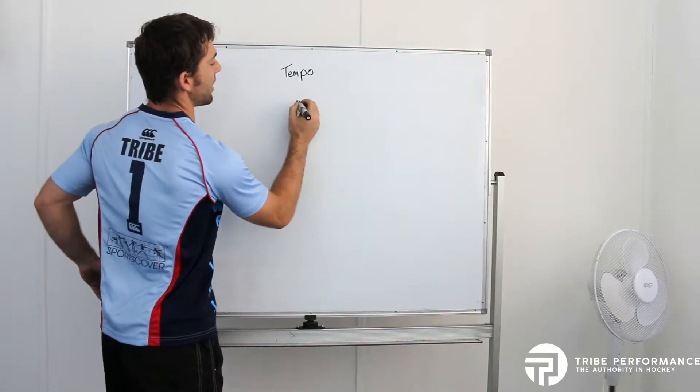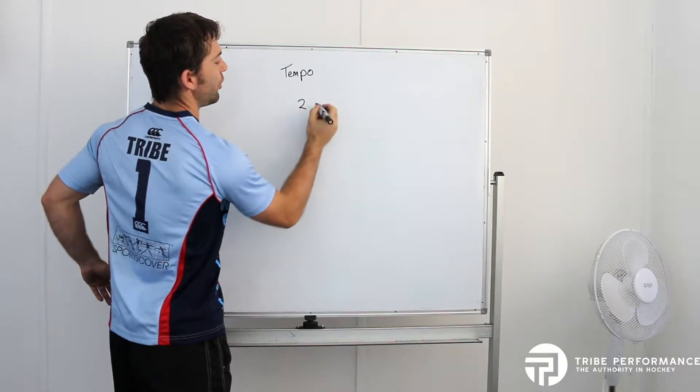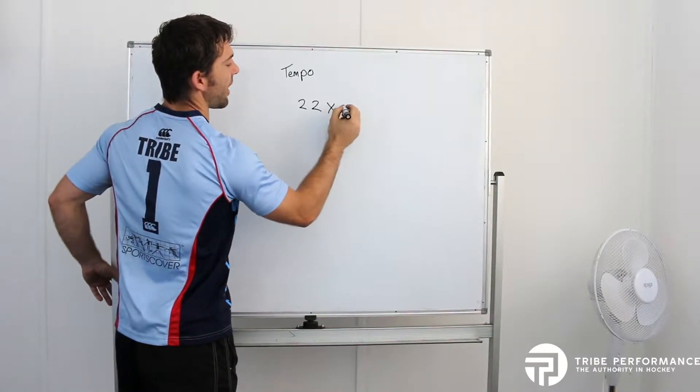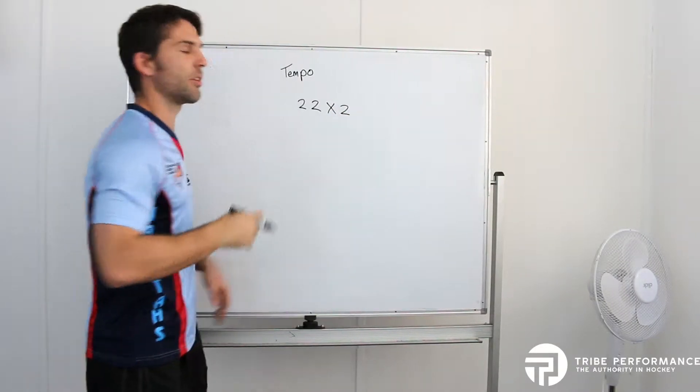So let's say I'll write a basic tempo up. We're using 2-2-X-2. This is quite a very simple one.